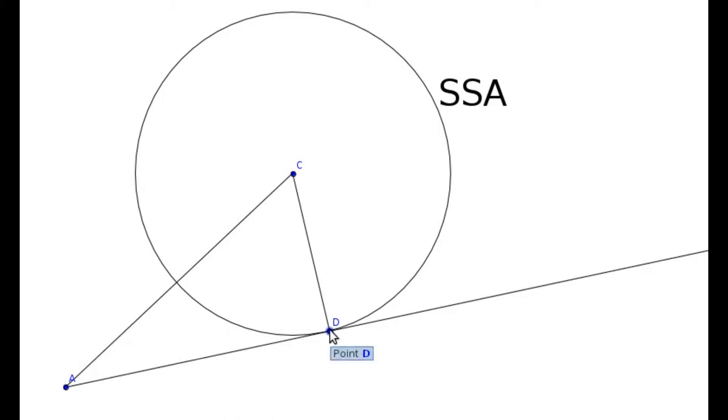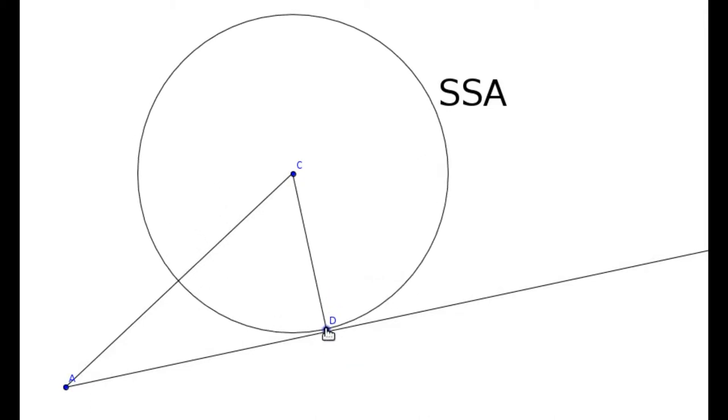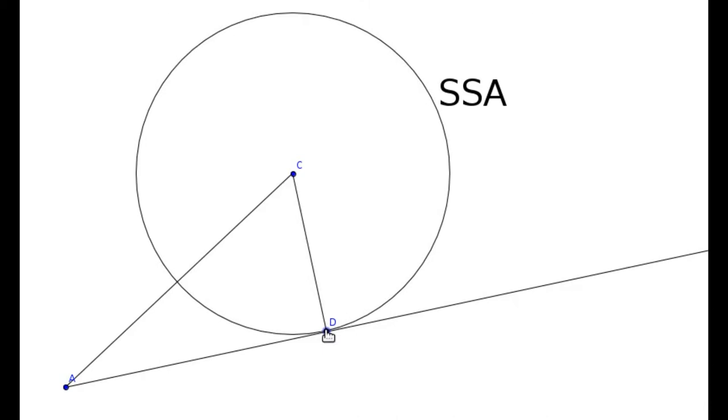So notice what we've observed. If that's too short, there is no solution. If it's exactly the perpendicular distance, then it's exactly one solution.